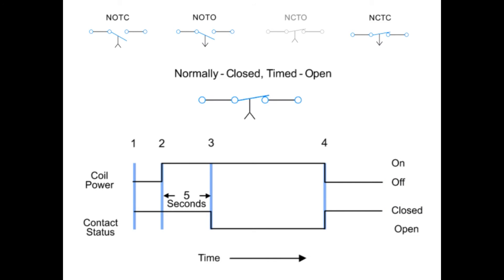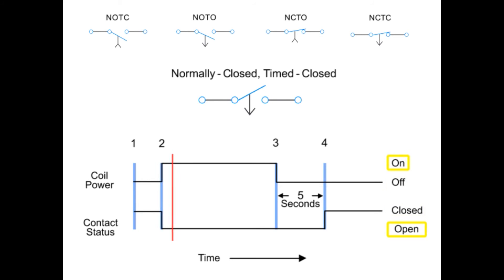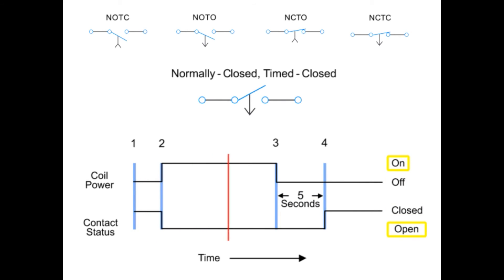The last time-delay relay we will look at employs a normally closed, timed closed contact. Similar to the normally closed, timed open contact, this type of contact is normally closed when the coil is de-energized and opened by the application of power to the relay coil. However, unlike the NCTO contact, the timing action occurs when the coil is de-energized instead of when it is energized. Thus, the contacts open immediately when the coil is energized and close five seconds after the coil is de-energized.